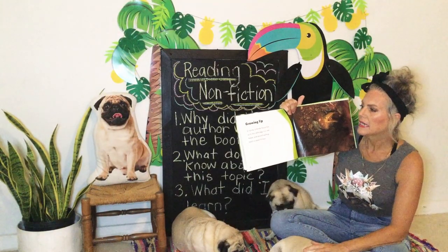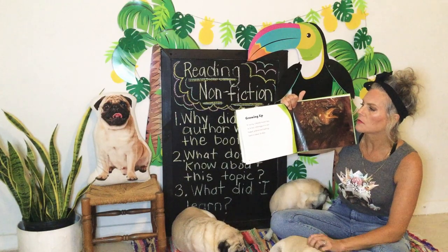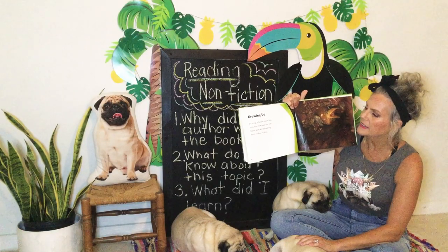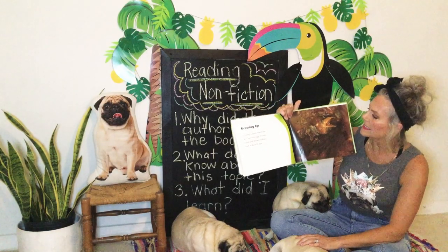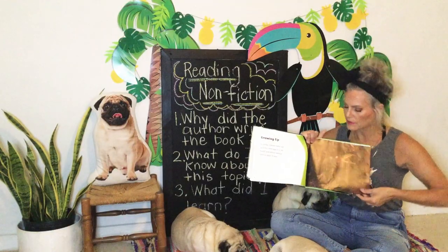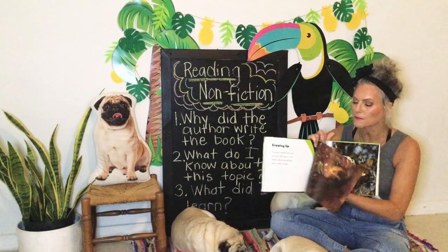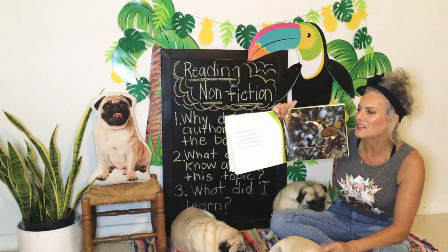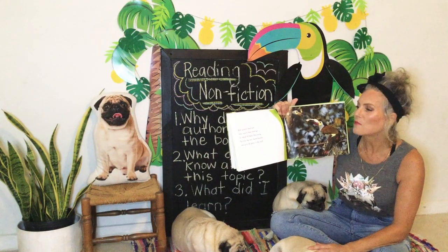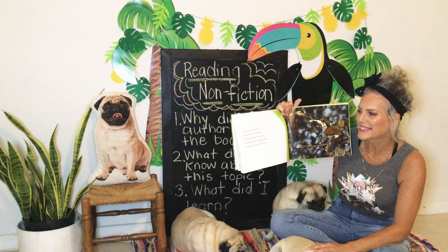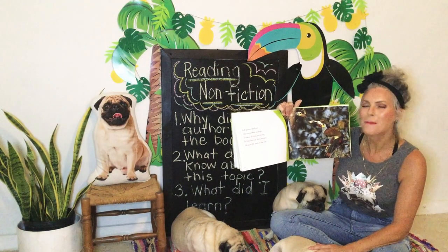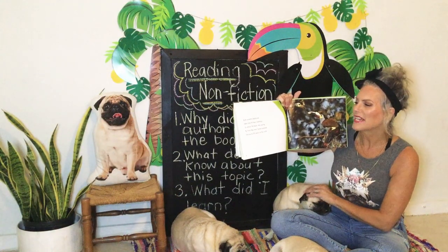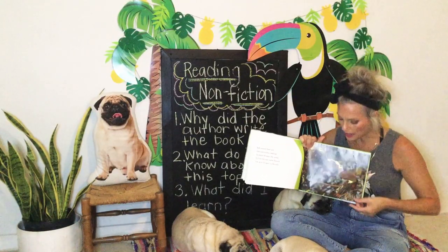Growing Up. In spring, a female toucan lays up to four white eggs in a nest. Naked, pink-skinned nestlings hatch in about 16 days — that means they have no feathers on them and it takes 16 days for their eggs to hatch. Both parents feed and take care of their nestlings. In about 50 days, the young fly from the nest. Some toucans live up to 20 years in the wild.